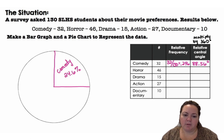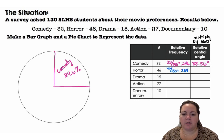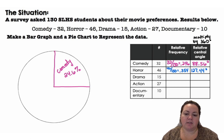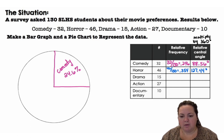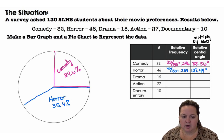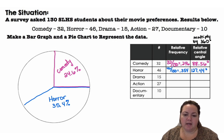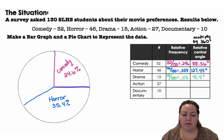I'm going to label it with the percentage 24.6%. Horror is 46 out of 130, which is 0.354. If I multiply that by 360 degrees, I get 127.44 degrees — that's an obtuse angle, about a third of the pie chart, so 35.4%. Drama is 15 out of 130, which is 11.5%, giving a 41.4 degree angle.